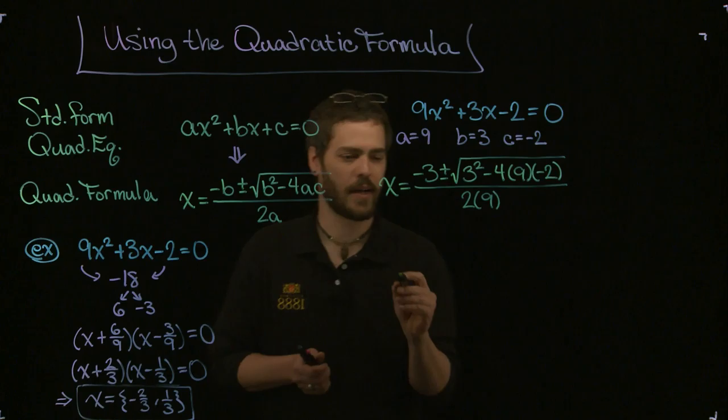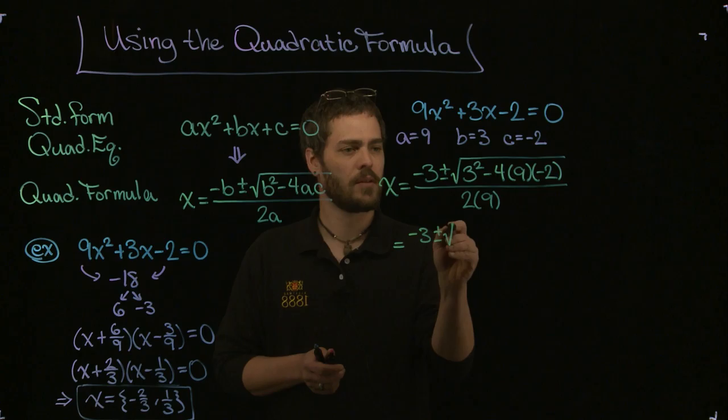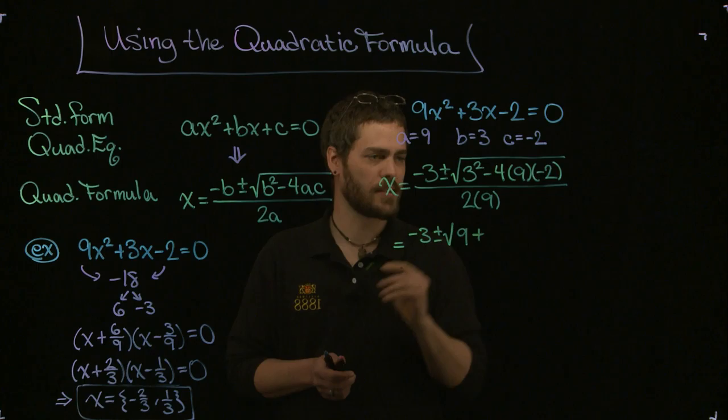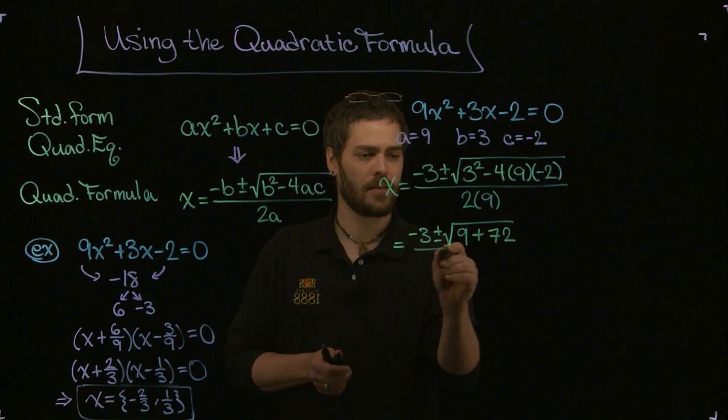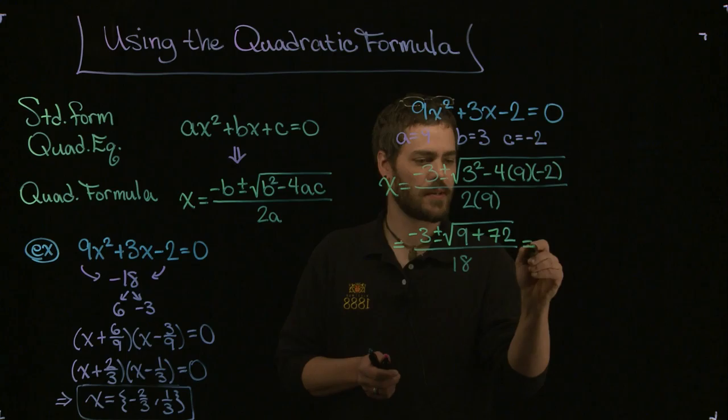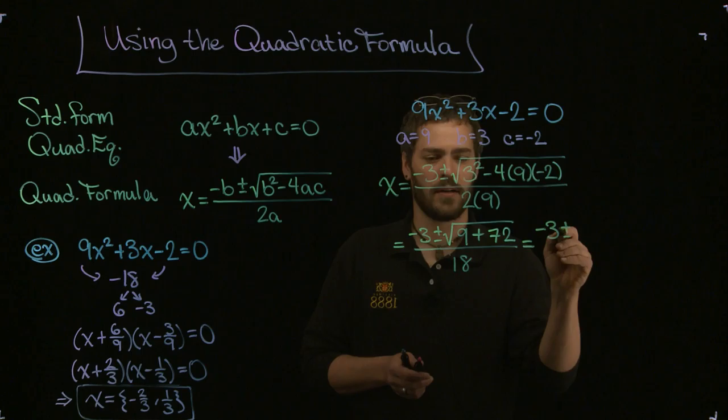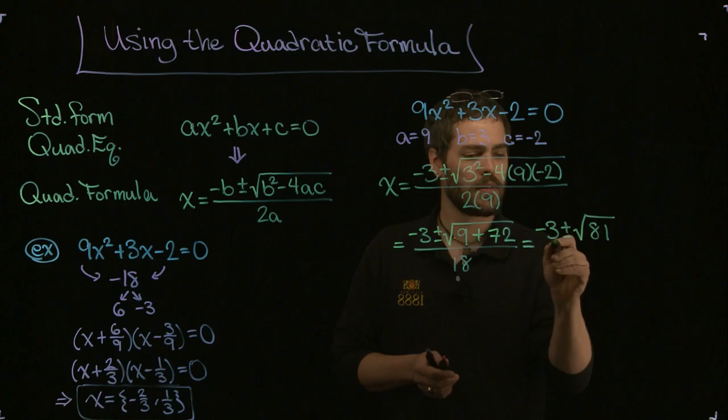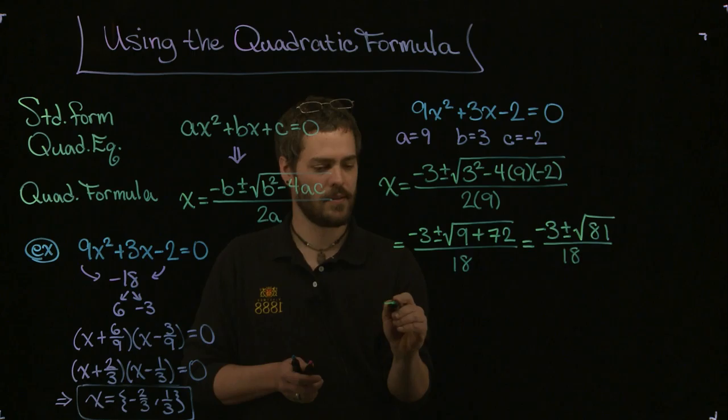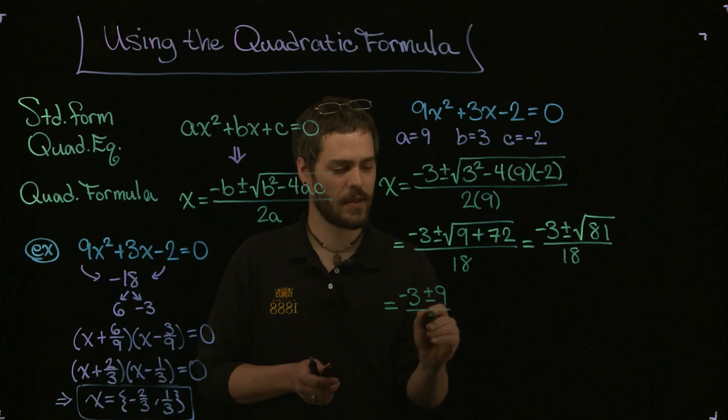Let me continue from here. This gives me negative 3 plus or minus the root of 9, negative 4 times 9 times negative 2. That's going to give me a positive overall, 72. All right, 2 times 9 is 18. Let me continue this right here. This gives me negative 3 plus or minus root 81 all over 18. The root of 81 comes out nice. This gives us negative 3 plus or minus 9 over 18.